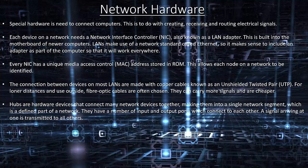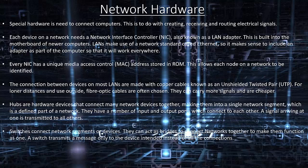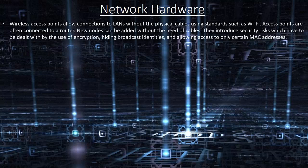Hubs are hardware devices that connect many network devices together making them into a single network segment. A signal arriving at one port is transmitted to all others. Switches connect network segments or devices and can act as bridges. A switch transmits a message only to the intended device instead of all connections. Wireless access points allow connections to LANs without physical cables using standards such as Wi-Fi. New nodes can be added without the need for cables, but they introduce security risks dealt with through encryption, broadcast identities, and allowing access to only certain MAC addresses.